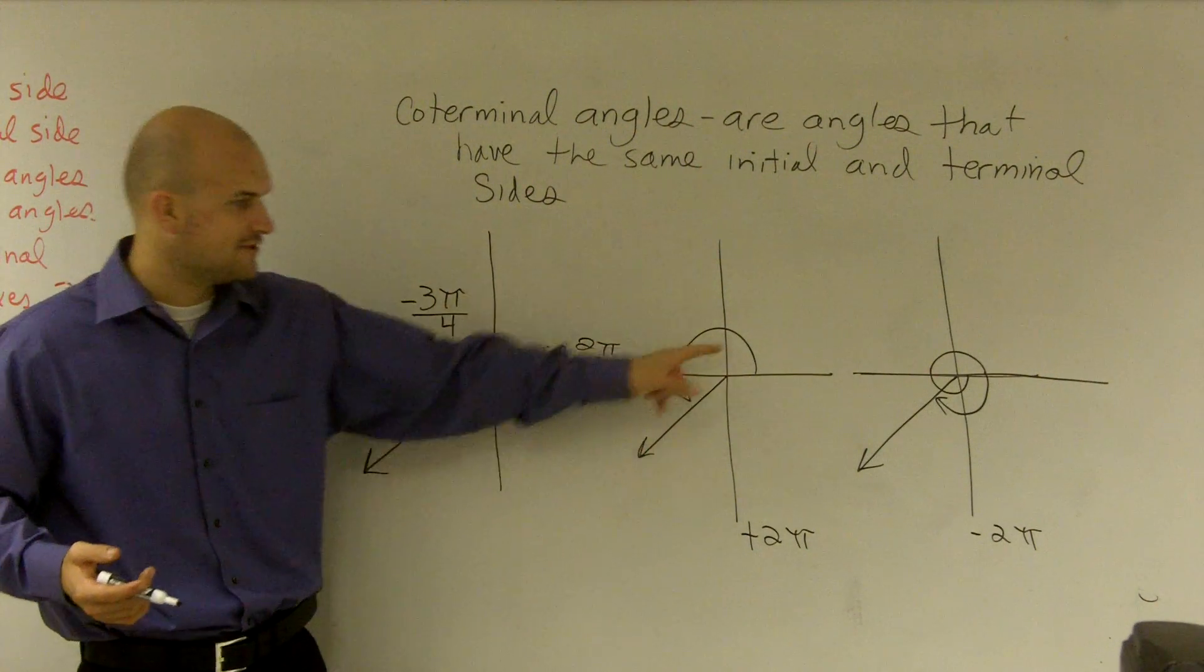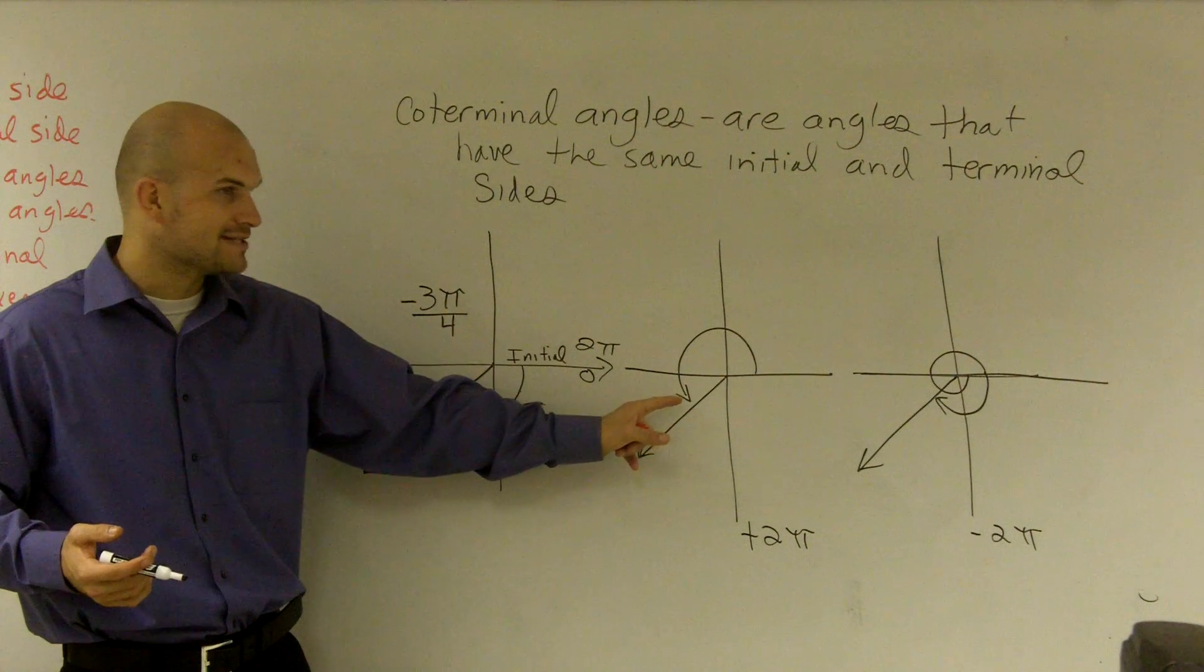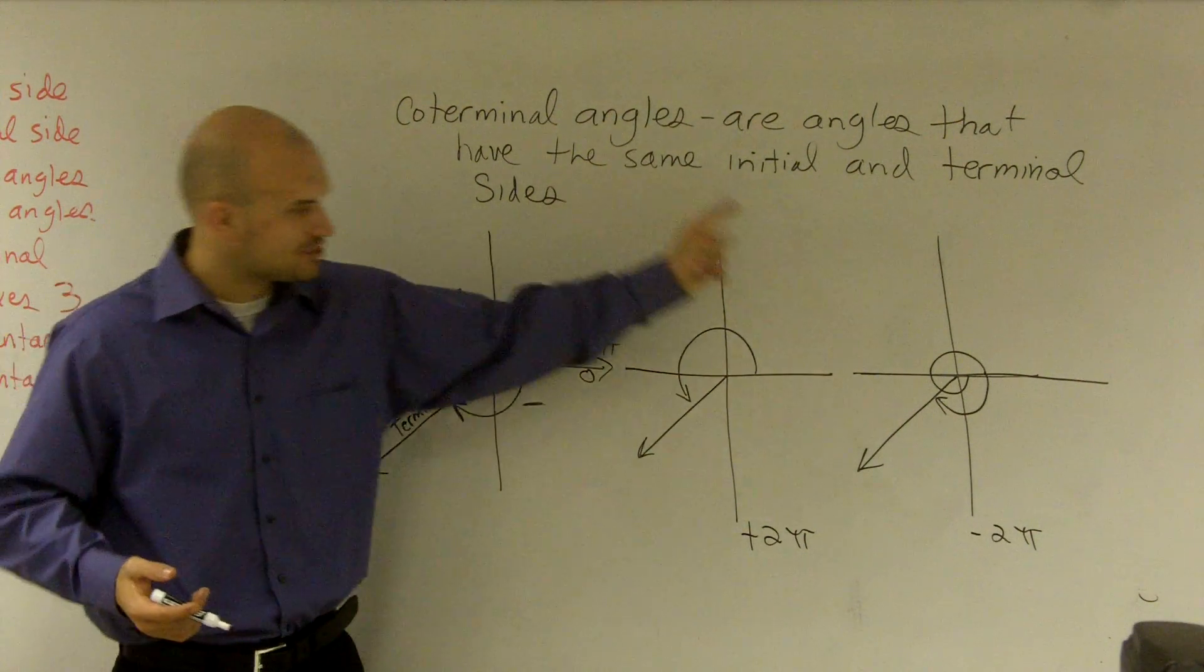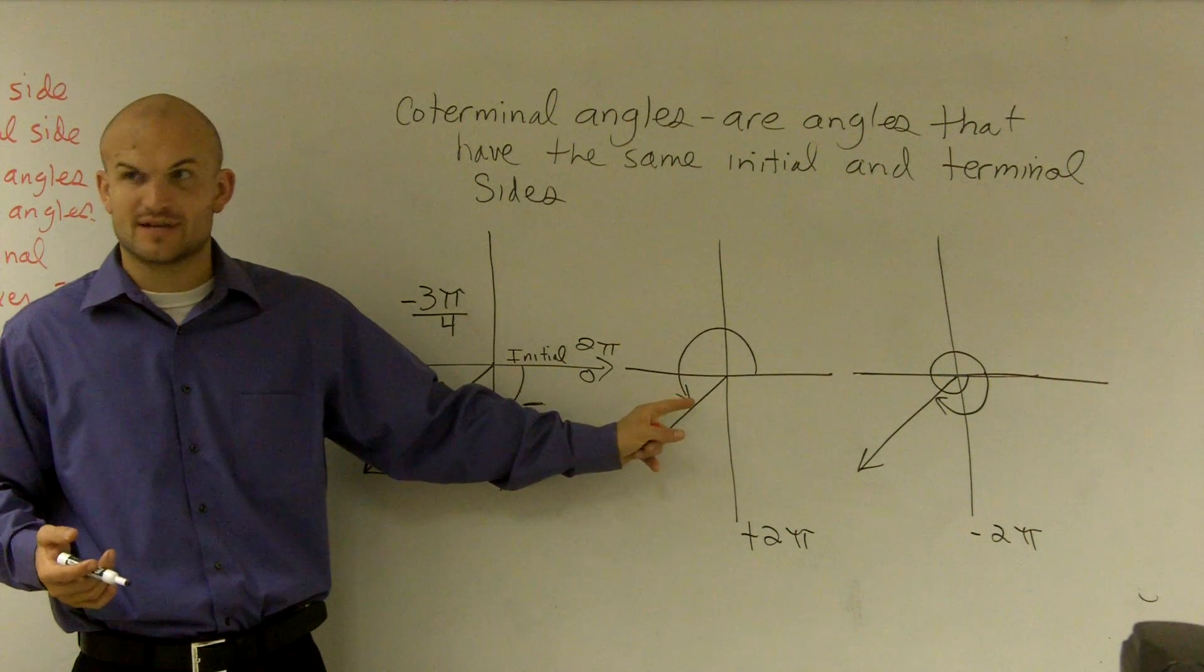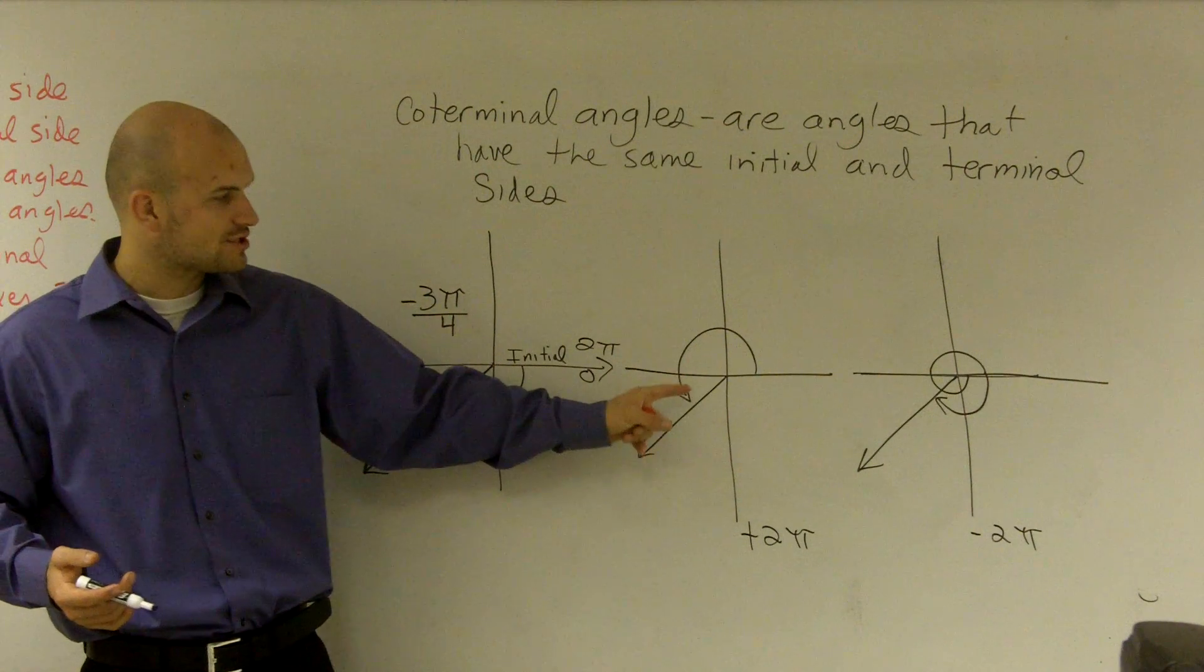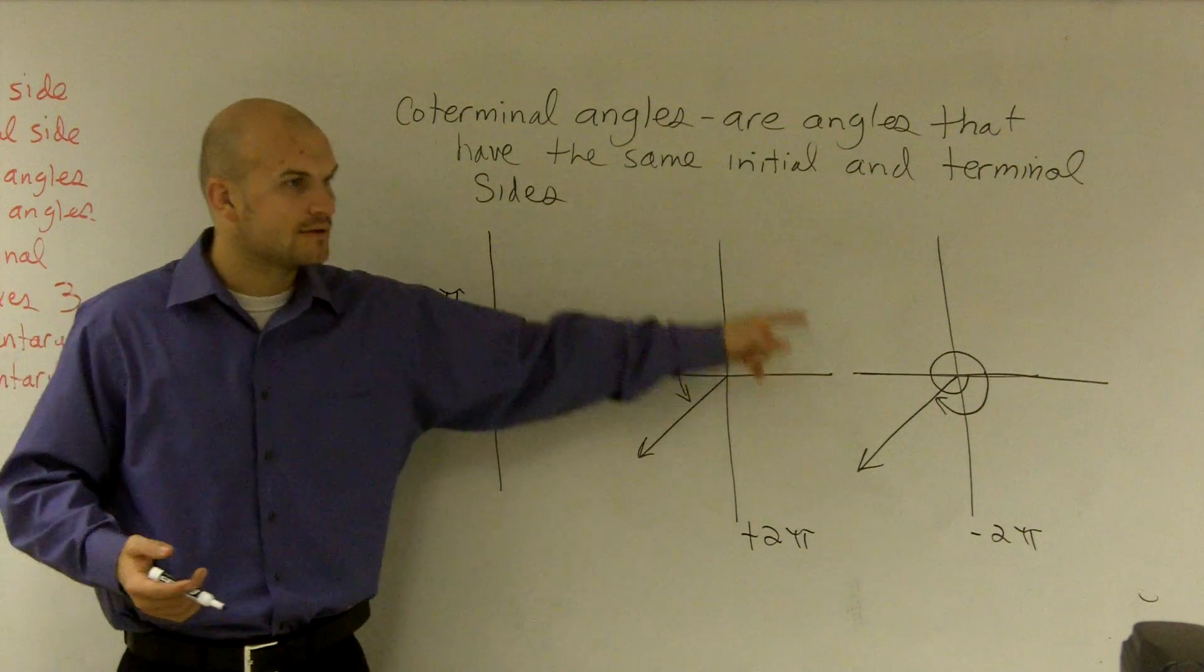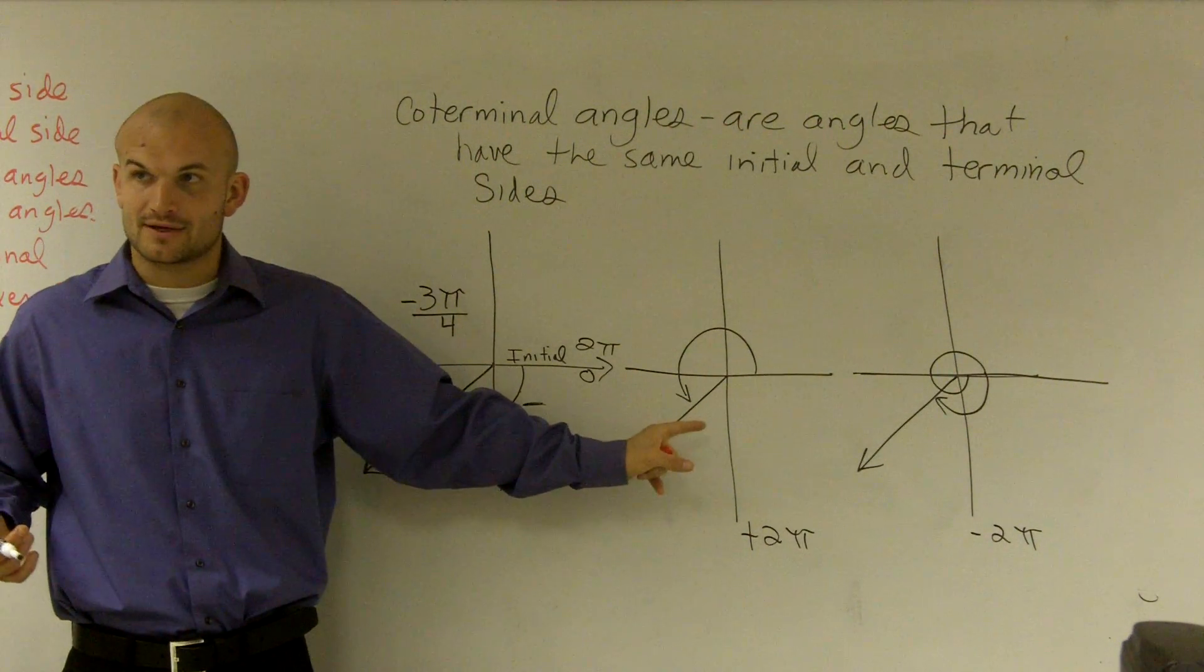So if I'm here at my terminal side, if here's my angle and I add 2π to it, I'm just going back around to that exact same spot. Do you guys see that? Or if I subtract 2π, I'm still going to take me back to my original angle.